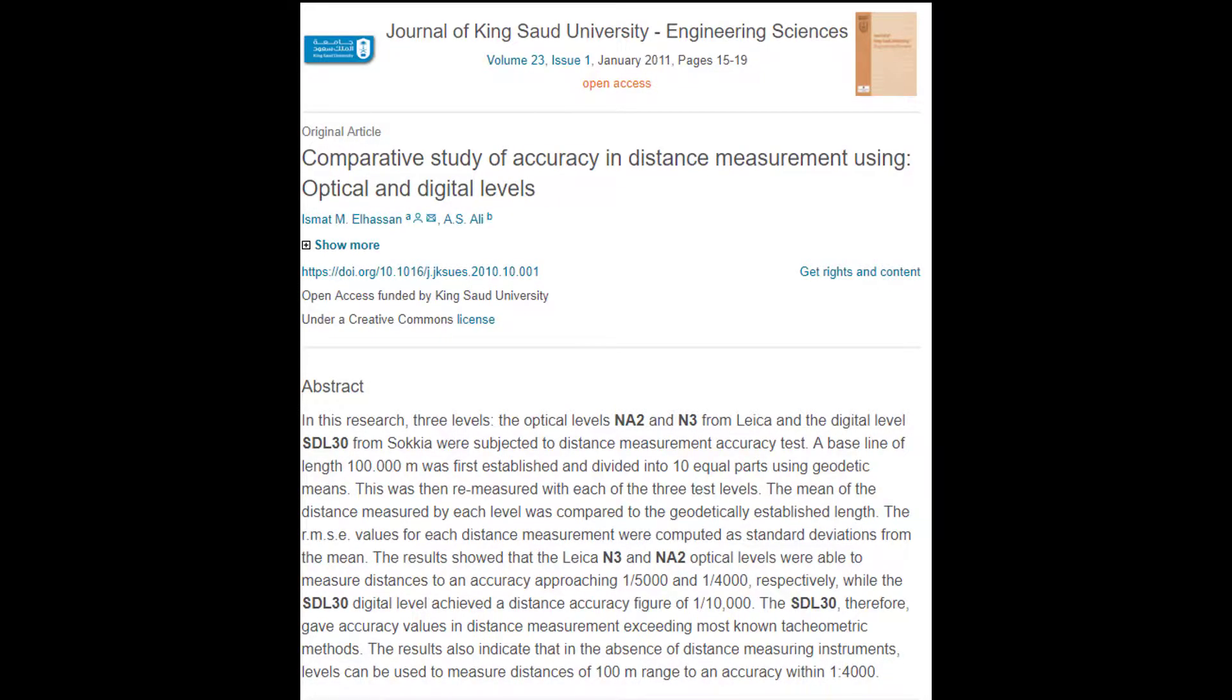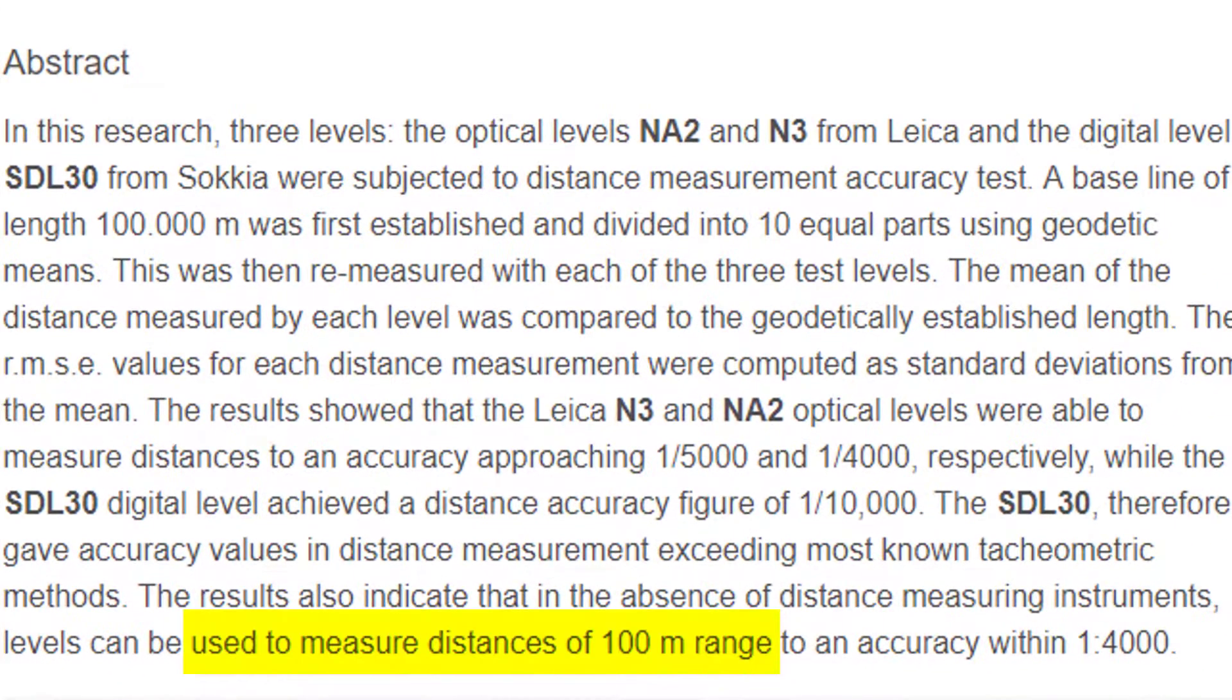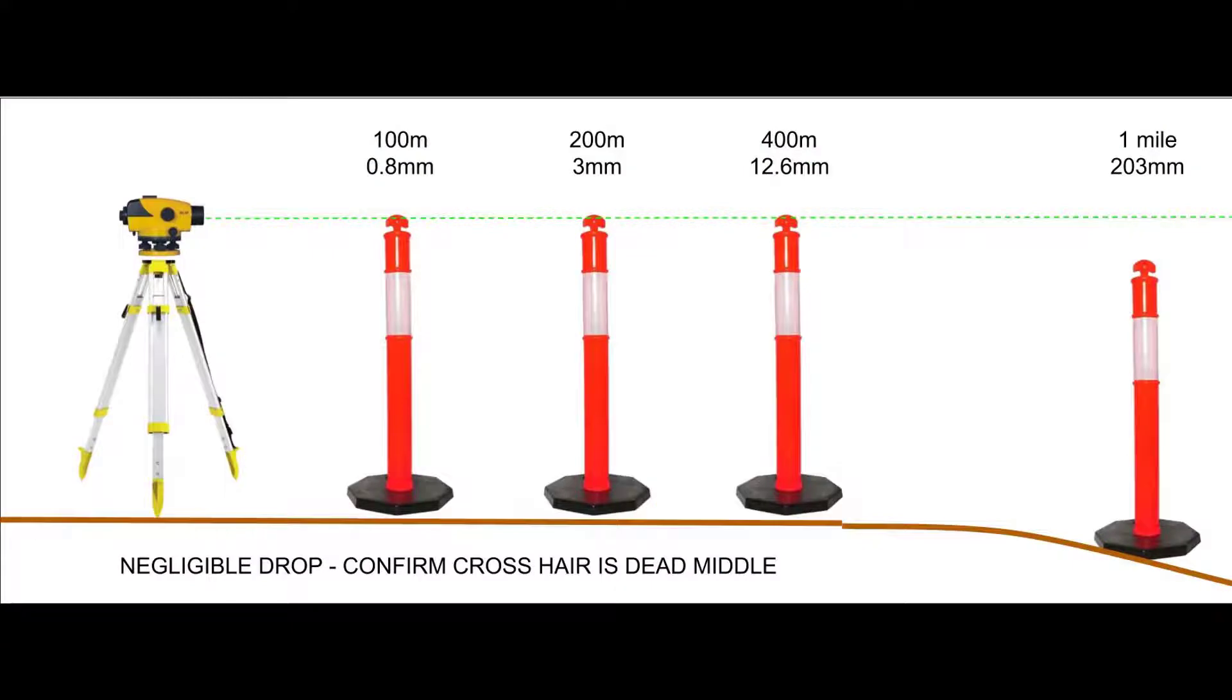Auto levels are designed for a maximum of 100 metres. They are not suitable for a 6 mile observation. If someone does do a 6 mile observation, then at the very least, they should demonstrate the calibration, like I've suggested for the audience, to verify that they can trust what their eyes are seeing through the auto level.